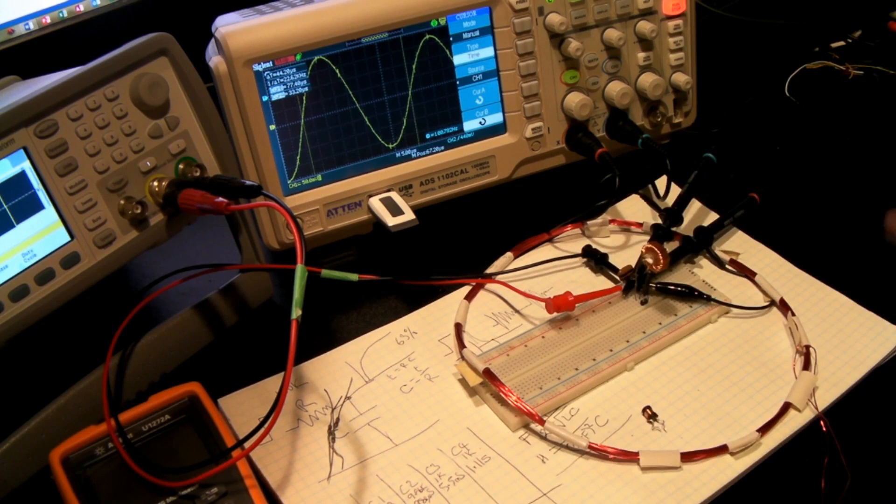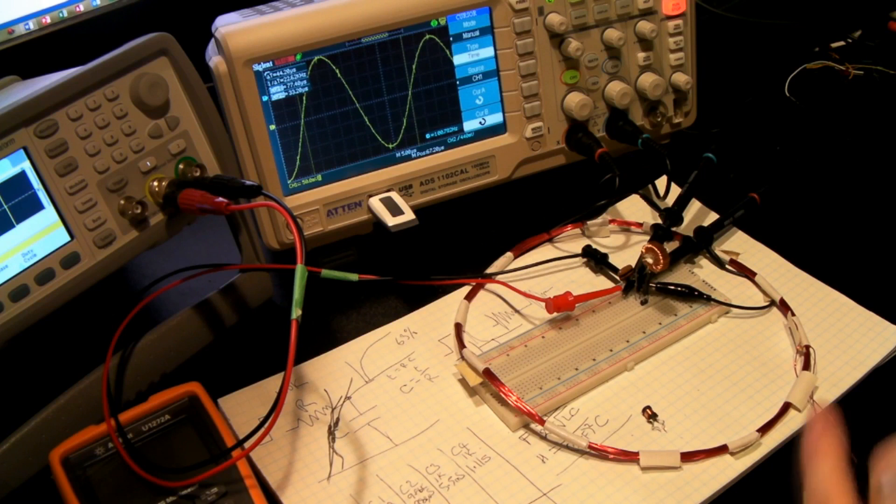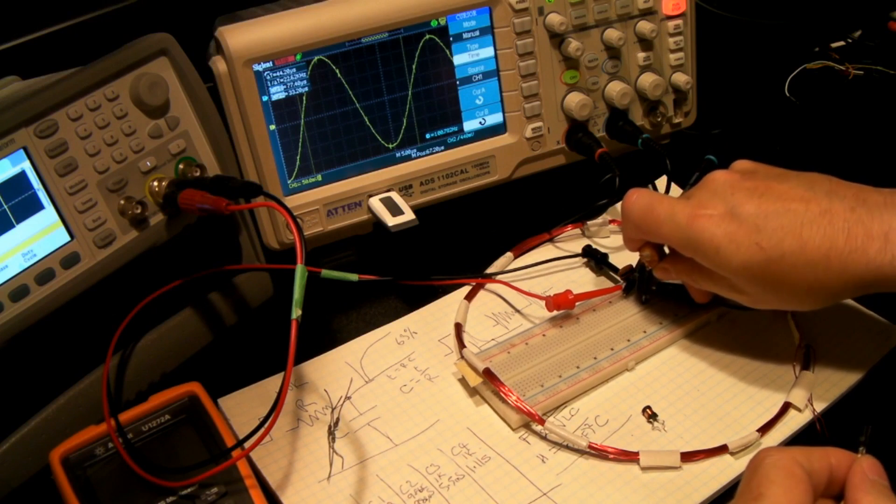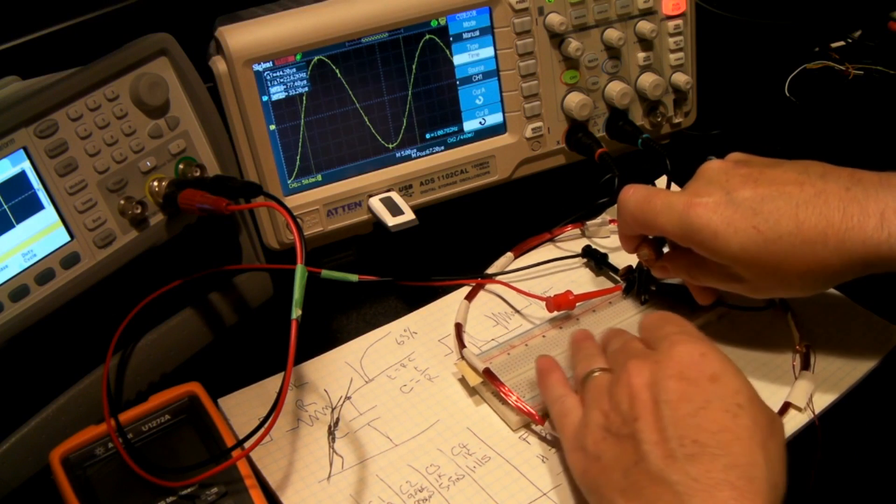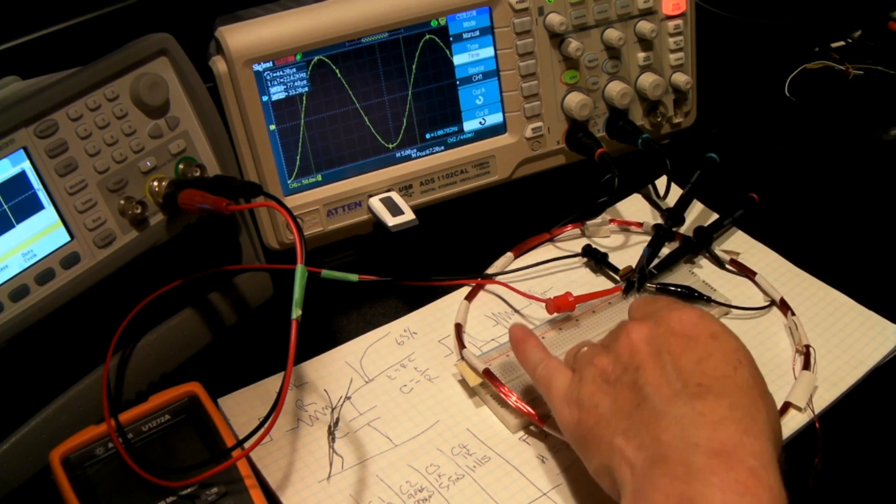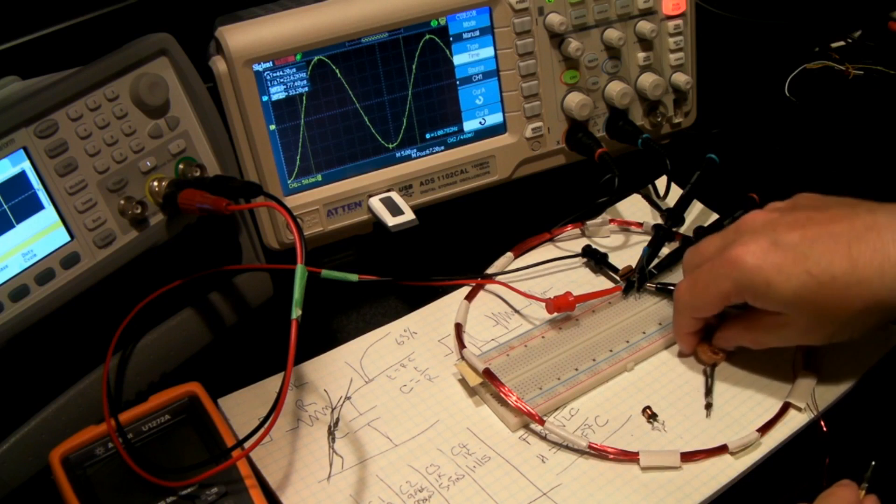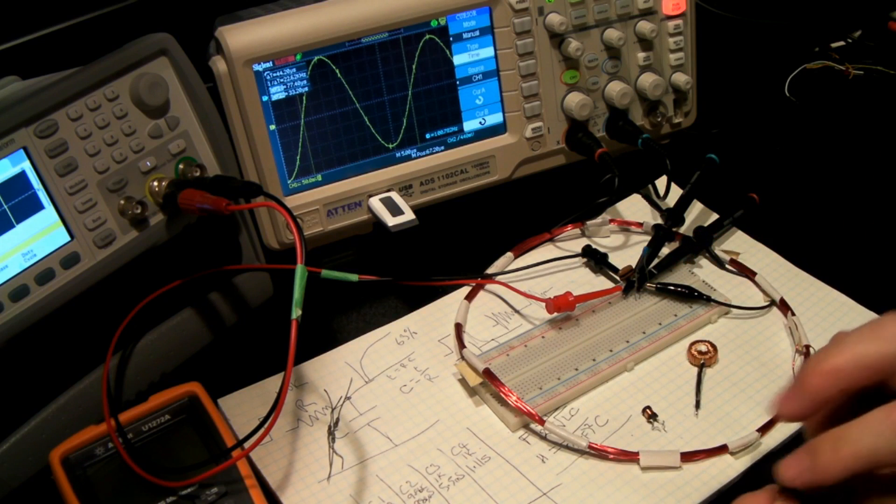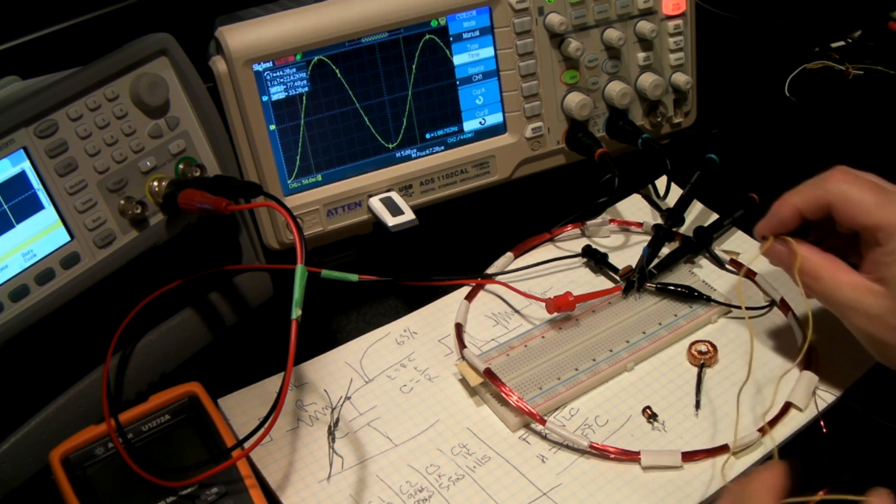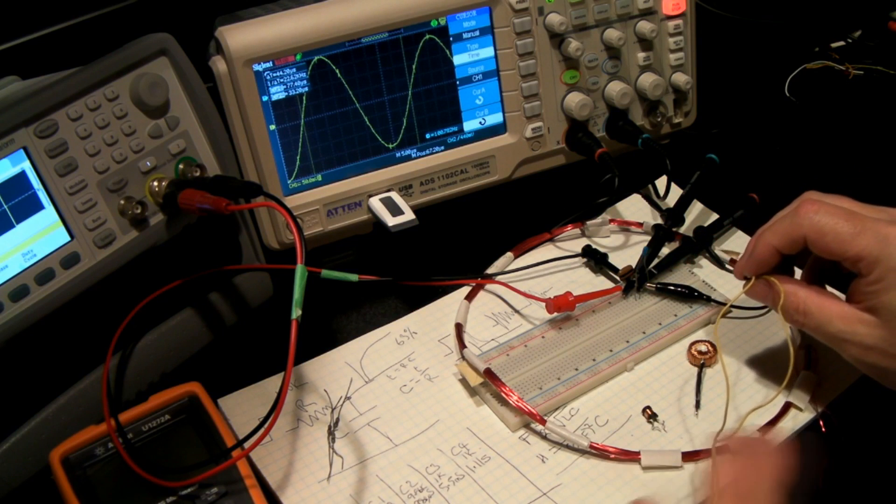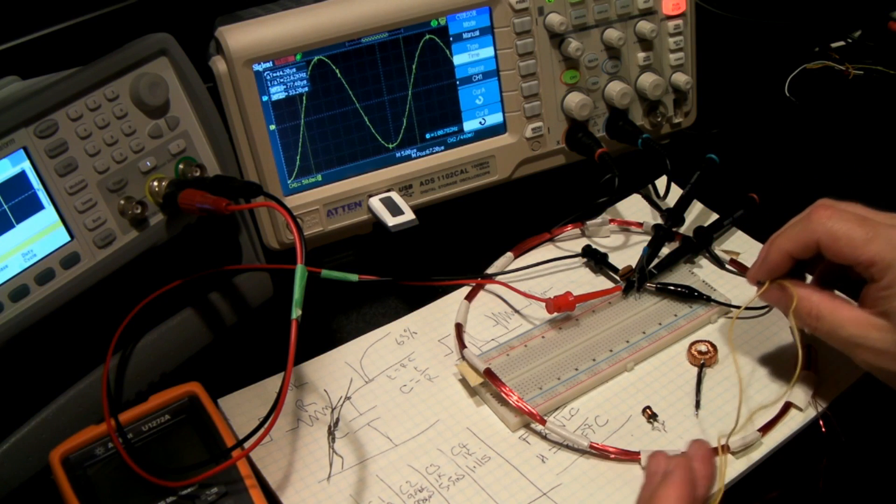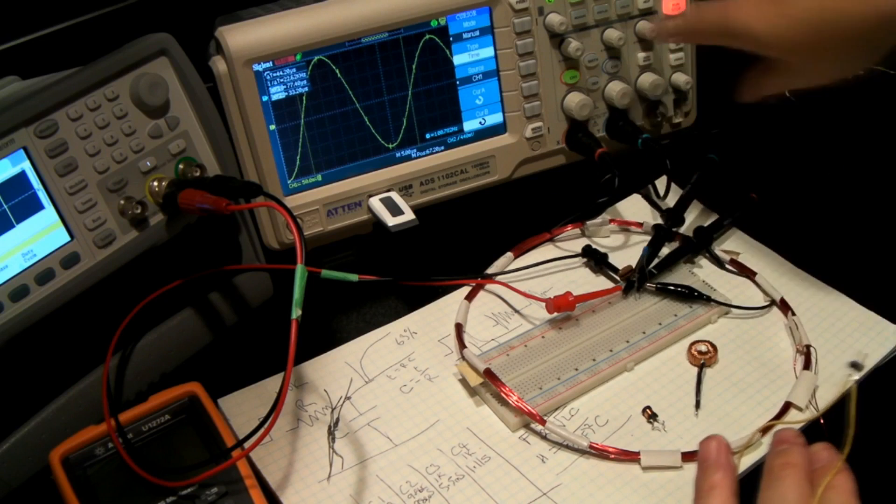All right, now this third inductor, which I've got no idea what kind of value it is. I was building this one. If you notice the size of it, I was actually working on trying to build a cat flap that uses an RFID chip on the cat collar to detect the cat presence and unlock the cat flap. So I had to make a coil that was big enough.